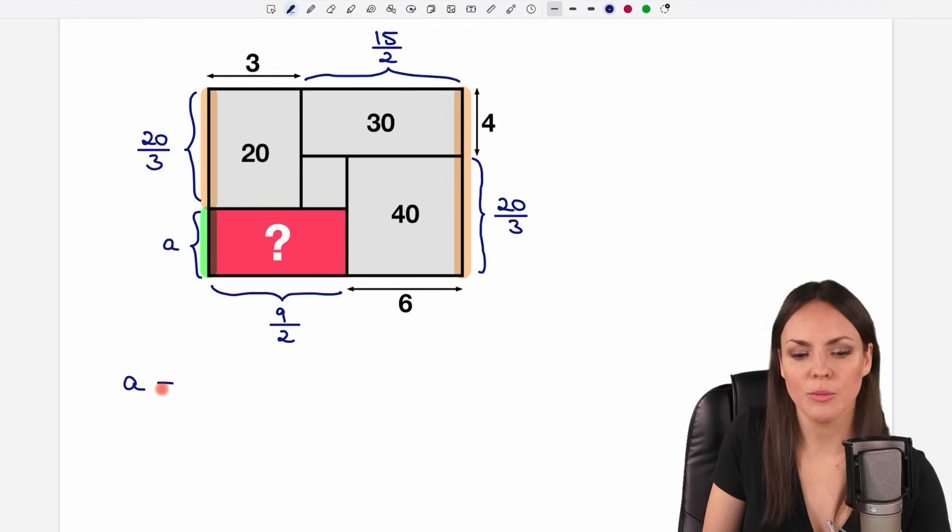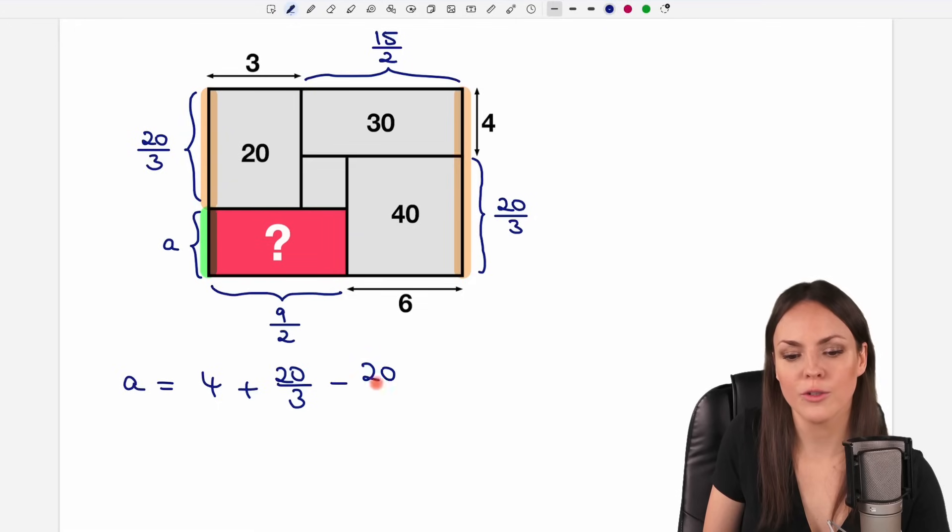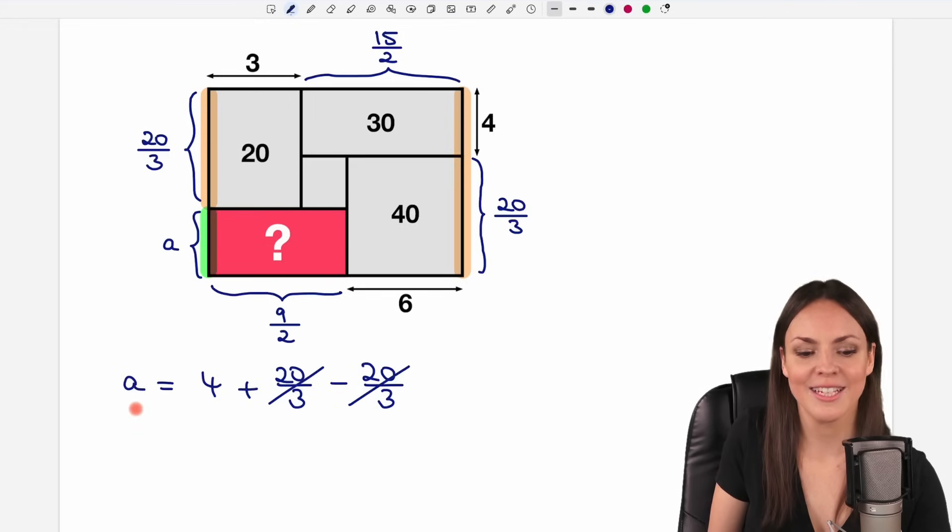So A equals the entire side. It's the 4 plus the 20 over 3. This is too long. So I subtract this part. I subtract 20 over 3, which is great because this just cancels out. And only the 4 is left. So I have found my A. It's of length 4.